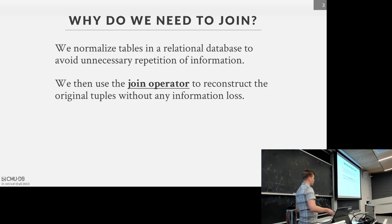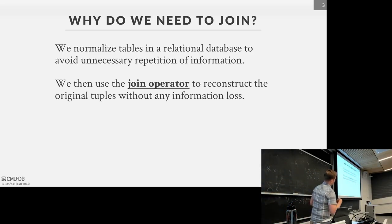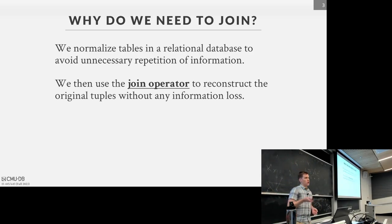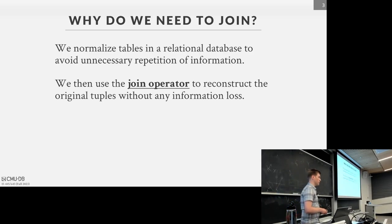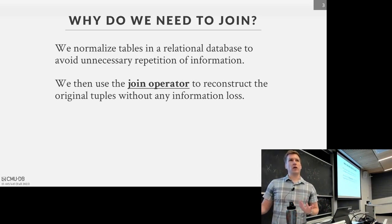A lot of people who adopted NoSQL systems ended up building joins on the application side anyway, which caused redundancy and slow systems. From our perspective, the relational model won again. Another reason joins are important: analytical OLAP systems are going to spend 20 to 50 percent of their time just working on joins. So using the right join algorithm and the right join order is going to be the high pole in the tent determining your query runtime.